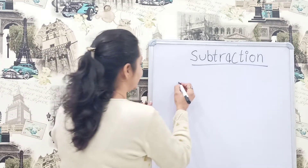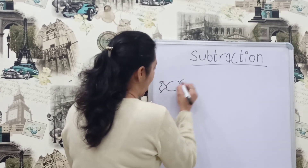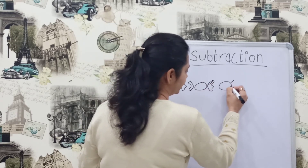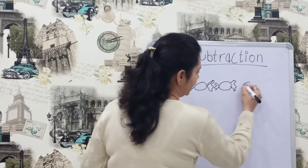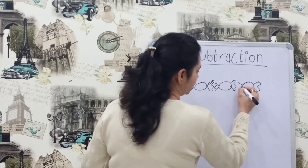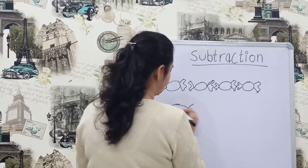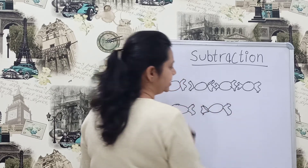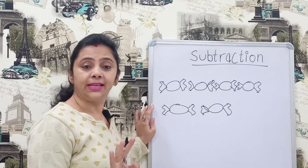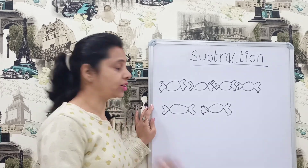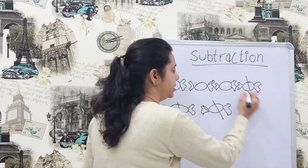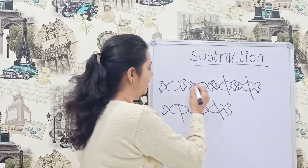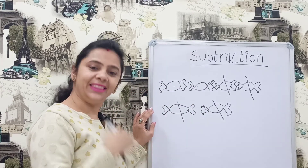Now children, I am having six chocolates — one, two, three, four, five, six. Four chocolates I ate — one, two, three, four. How many chocolates left with me? Let's count: one, two — two chocolates left with me.